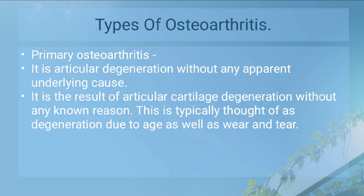Primary osteoarthritis is articular degeneration without an apparent underlying cause. It is typically due to degeneration caused by age as well as wear and tear of the joint capsule.